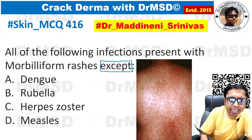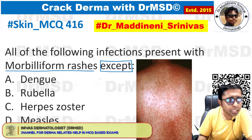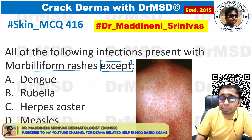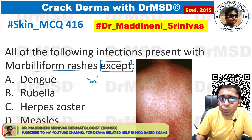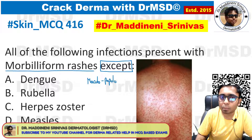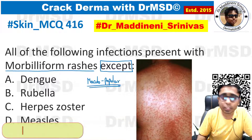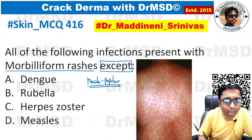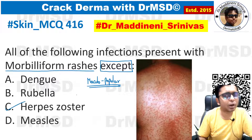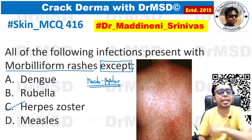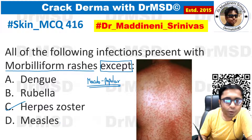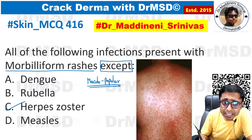Let us see the explanation for this MCQ. Morbilliform rashes — basically the patient is going to have a generalized maculopapular rash present all over the body. If you marked answer as option C, you are absolutely right. Morbilliform rash simply means a measles-like rash.